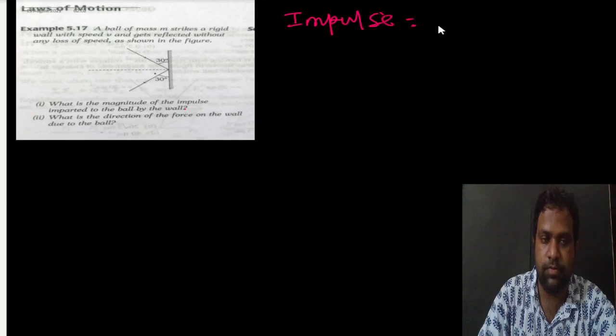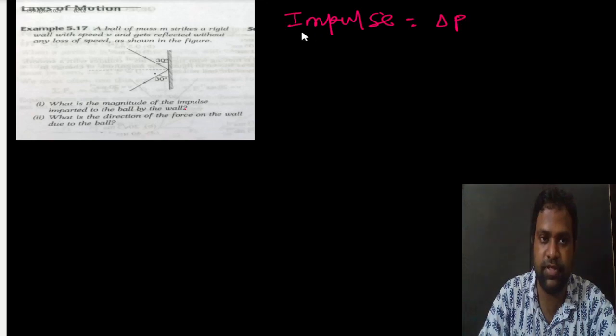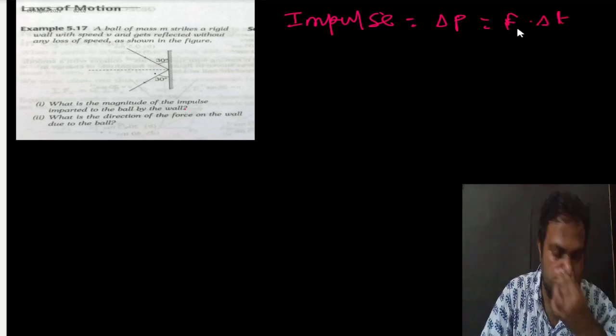Impulse is the rate of change of momentum. Delta P is impulse, and this is also equal to force into delta T. So this is your impulse.